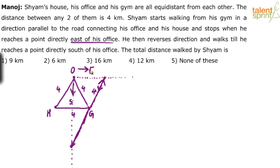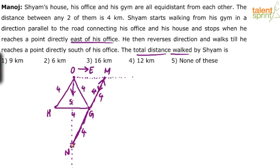This is the south-of-office point, and this is the east-of-office point. The total distance walked by Shyam — let's call these points M and N. From G to M he covers 4 kilometers. When he reverses direction, from M back to G is 4 kilometers again. Then G to N — if you observe, this is a symmetric diagram, like a rhombus. So if GM is 4, GN also has to be 4. Total distance covered by Shyam is 4 + 4 + 4 = 12 kilometers.